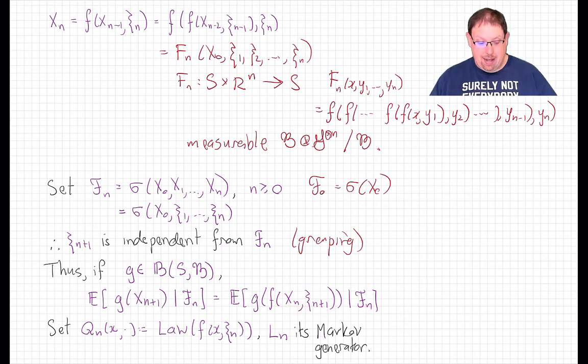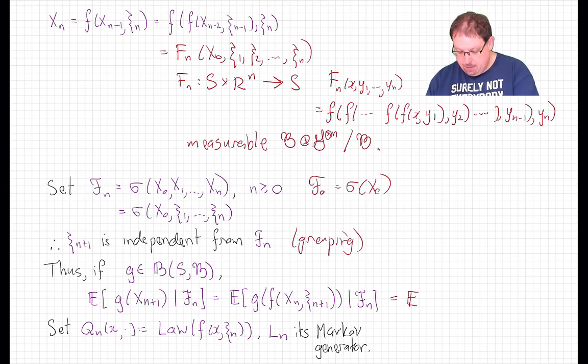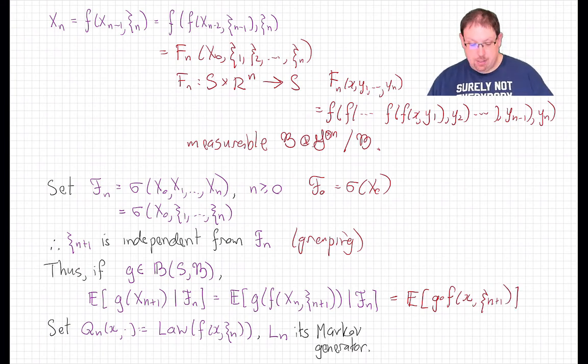We know how to evaluate that conditional expectation because this variable is independent of that sigma field. As we showed several lectures ago, that means that we can evaluate this just by taking the regular old scalar-valued expectation of the function g composed with f at variable x and random variable ξ_{n+1}. That gives me a number for each little x.